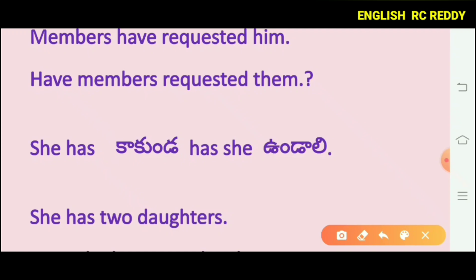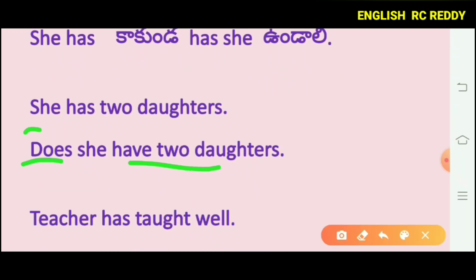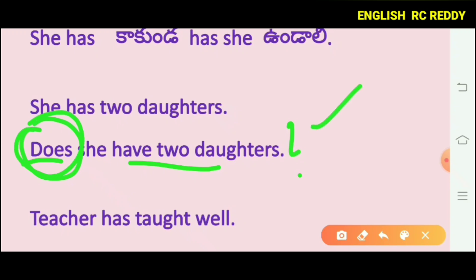For example, 'She has two daughters' is a common assertive sentence. When changed to a question, it becomes: 'Does she have two daughters?' This ends with a question mark, making it an interrogative sentence.